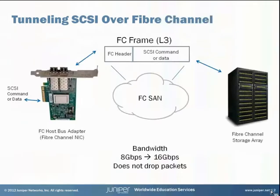Fibre Channel allows the SCSI protocol to be tunneled over Fibre Channel Storage Area Networks or SANs to huge network storage arrays. The Host Bus Adapter, or HBA, takes a SCSI command and encapsulates it in a Fibre Channel packet and the Fibre Channel SAN delivers it to the storage array. The storage array has a built-in HBA that removes the Fibre Channel encapsulation and presents a raw SCSI command to the disk, which then reads or writes data.